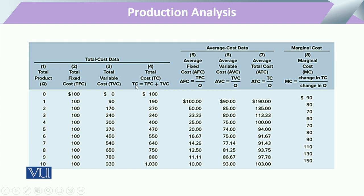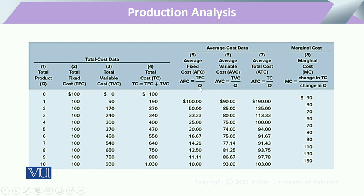When we calculate total cost by adding total variable cost and total fixed cost, it increases from 100 to 1030. To calculate average fixed cost, we divide total fixed cost by the amount of output Q. Similarly, average variable cost is total variable cost divided by output Q. We can thus calculate all types of costs here for use in our accounting balance.